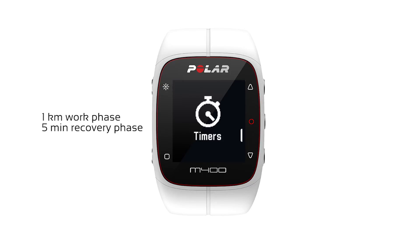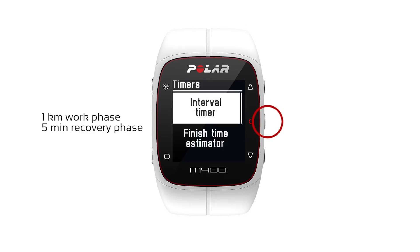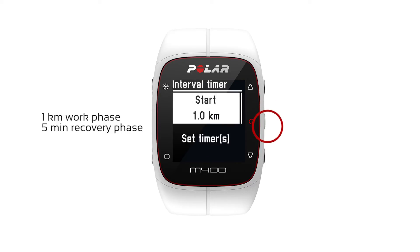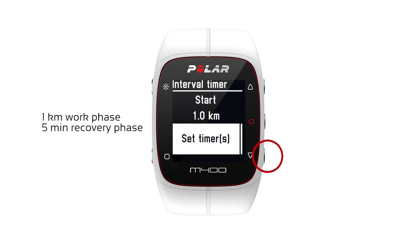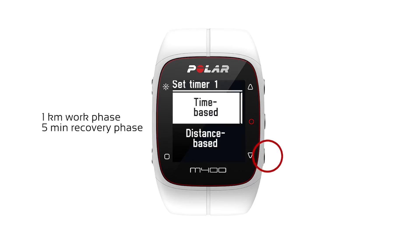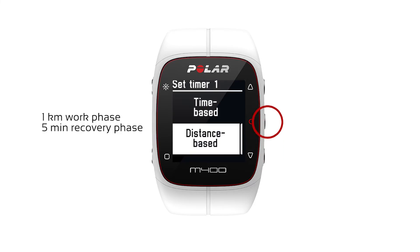For example, a one kilometer work phase with a five-minute recovery phase is set in the Timers menu.